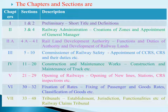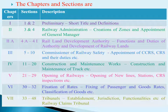Chapter 2A: Rail Land Development Authority contains nine sections, Sections 4A to 4I, which cover the functions and duties of this authority and development of railway lands.